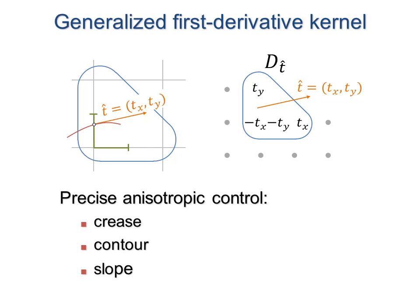For each curve-grid intersection, we compute the curve tangent and introduce a linear constraint on the three nearest pixels. This provides precise anisotropic control along crease, contour, and slope curves.